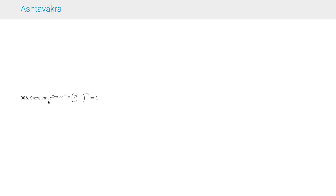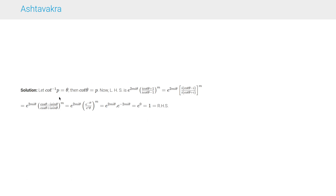Question 306 says: show that e^(2mi cot⁻¹p) · [(pi+1)/(pi-1)]^m = 1. We let cot⁻¹p = θ, so cot θ = p. The left-hand side becomes e^(2miθ) · [(i cot θ + 1)/(i cot θ - 1)]^m. Converting cot θ = cos θ/sin θ, the fraction simplifies to (cos θ - i sin θ)/(cos θ + i sin θ) = e^(-iθ)/e^(iθ). Taking the m-th power gives e^(2miθ) · e^(-2miθ) = e^0 = 1, as required.